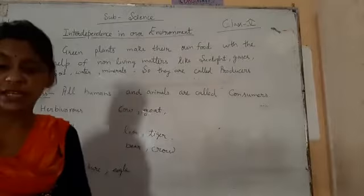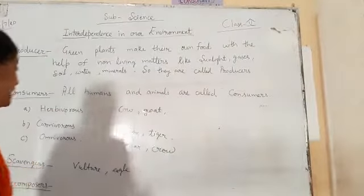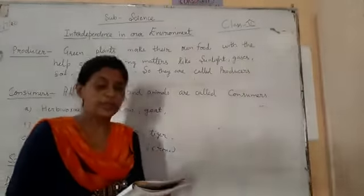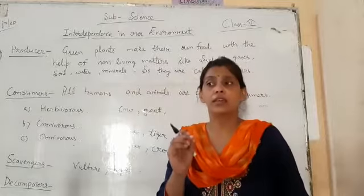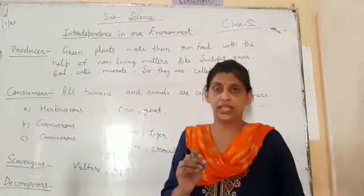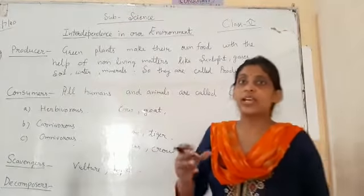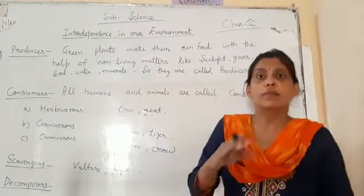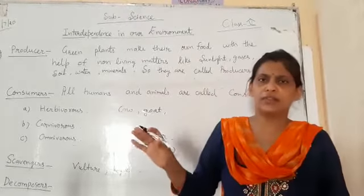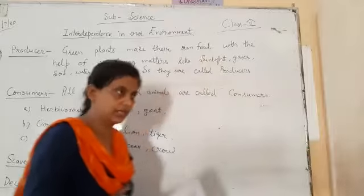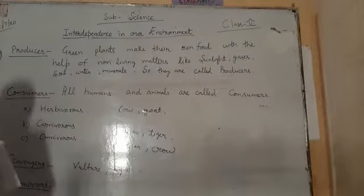Next are decomposers. What are decomposers? Decomposers decompose the dead plants and animals into smaller parts. Decomposers वो छोटे-छोटे living organisms होते हैं जो dead plants और animals दोनों की dead bodies या remaining parts को बिल्कुल छोटे parts में divide करते हैं और soil में convert करते हैं. वो होते हैं decomposers.